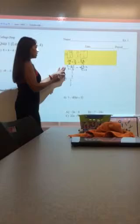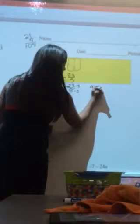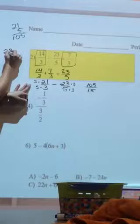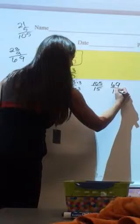Now you've got to do the math. You've got to do 21 times five. 105 over 15. And you've got to do 23 times three. 69 over 15.